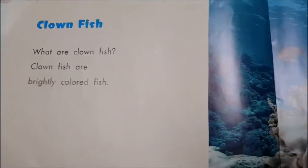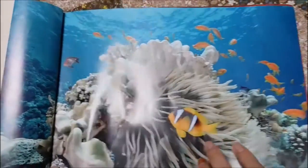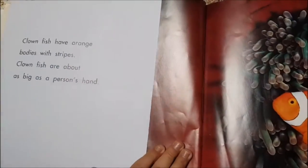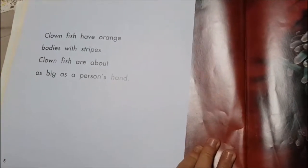Clownfish are brightly colored fish. Clownfish have orange bodies with stripes. Clownfish are about as big as a person's hand.